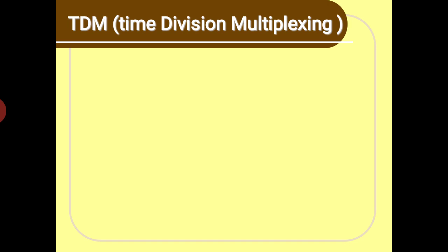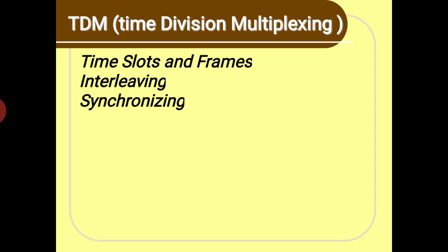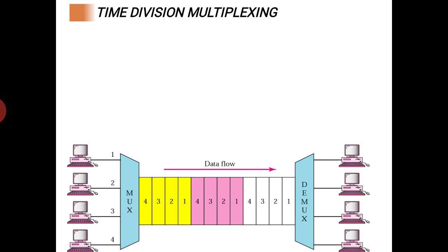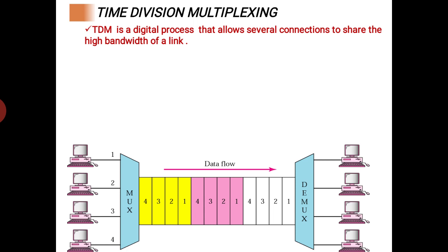Next is time division multiplexing. We will discuss time slots, frames, interleaving, synchronization, bit padding, digital signal services, T-lines, and inverse TDM. Twisted pair cable and coaxial cable can transmit both analog and digital signals. For analog signals we use frequency division multiplexing, but when transmitting digital signals — bits — we need time division multiplexing. TDM is a digital process that allows several connections to share the high bandwidth of a link.